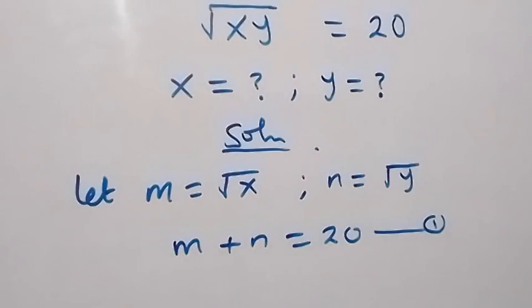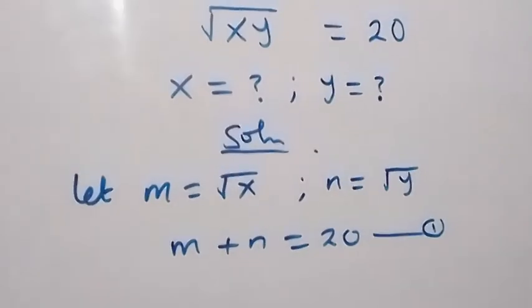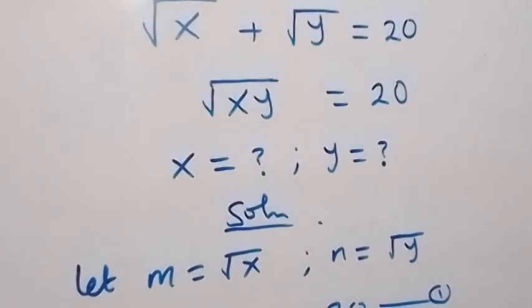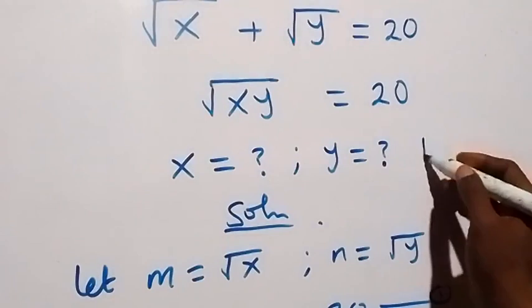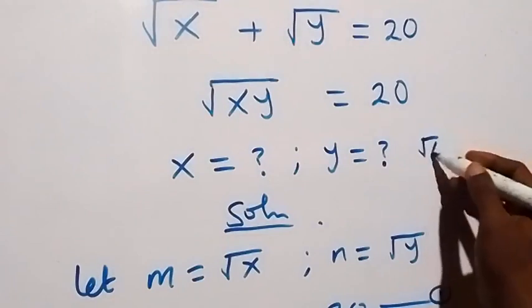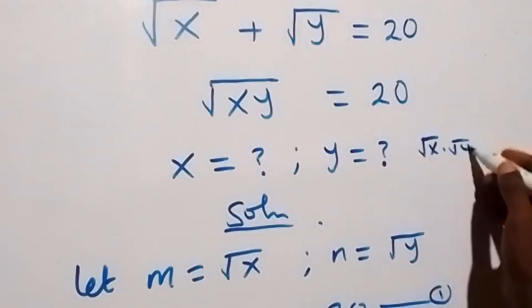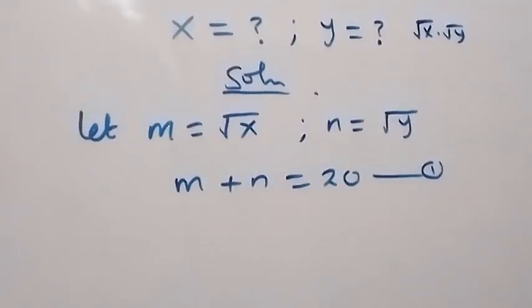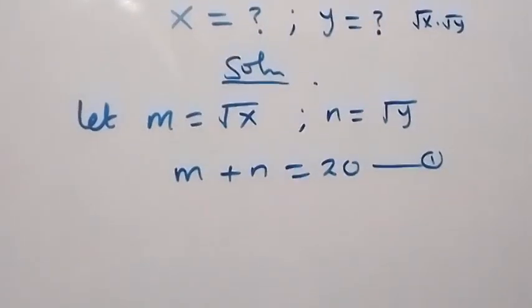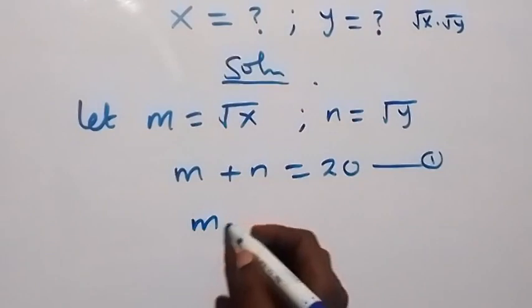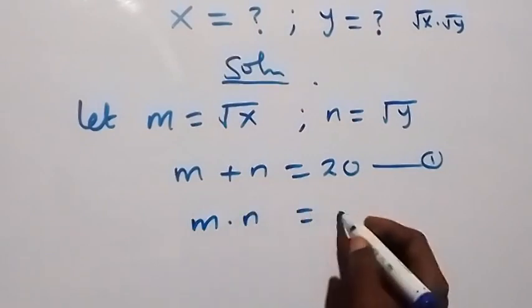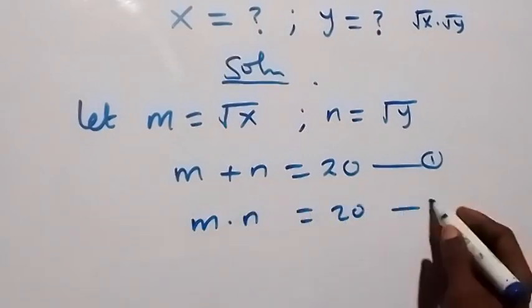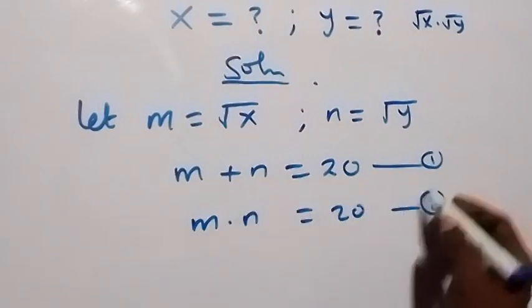Then also in the second equation given here, we have root xy, and root xy is the same as root x times root y. So that means root x times root y equals 20, which implies that n times m equals 20. Let this be equation 2.